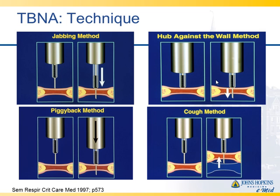There are four basic techniques that everybody should learn, and you should master at least two of them. The jabbing method involves pushing the catheter sheath into the lymph node while keeping the bronchoscope stable. The piggyback method involves advancing both the catheter and the bronchoscope at the same time. The hub-against-the-wall method is where you put the hub of the needle against the wall and then advance the needle. The cough method is where the patient assists — they cough and push the airway mucosa onto the needle. My favorite two are the jabbing and the coughing. Sometimes with very hard lymph nodes from sarcoidosis or lymphoma, the cough actually helps a lot. One problem now is we're using propofol and LMAs, so 98% of our patients don't have a cough anymore — moderate sedation works against that technique.